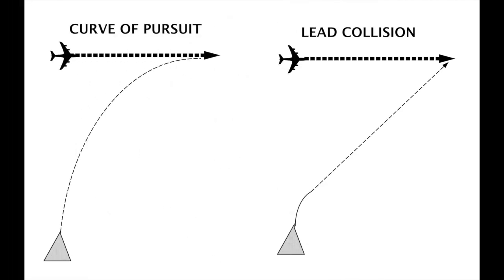When the missile is launched, it sees the target directly ahead, and as the target moves to the right, the missile turns to the right to keep the target directly ahead. This is called the curve of pursuit.